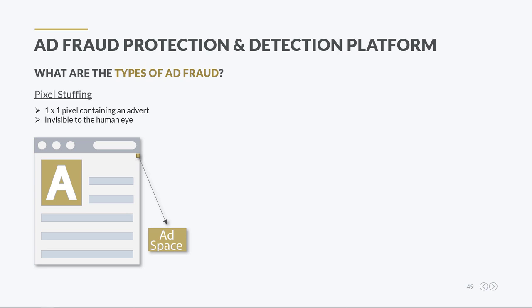Pixel stuffing occurs when a 1x1 pixel containing an advert is placed on a publisher's web page. Even though that ad space is invisible to the human eye, it can contain an entire advert, and therefore, it can generate a fake ad impression. Since that impression is considered valid, the advertiser has to pay for it. This method is used by dishonest publishers who generate more impressions from invisible ads to increase their revenues.